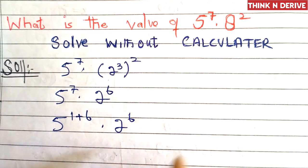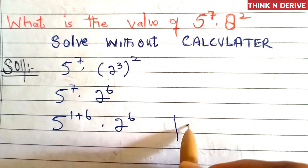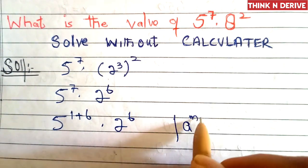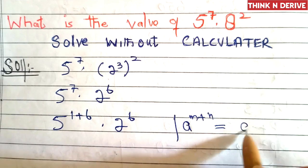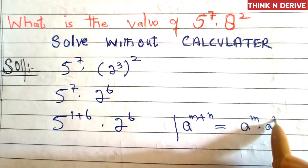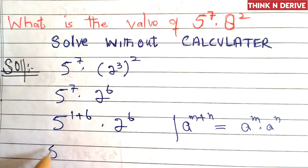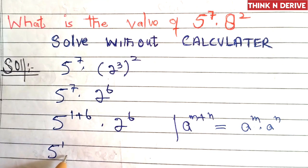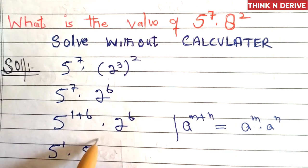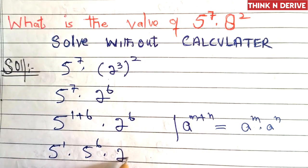Then we'll use an exponential rule here that is a power m plus n is equal to a power m into a power n. So this can be written as 5 power 1 into 5 power 6 into 2 power 6.